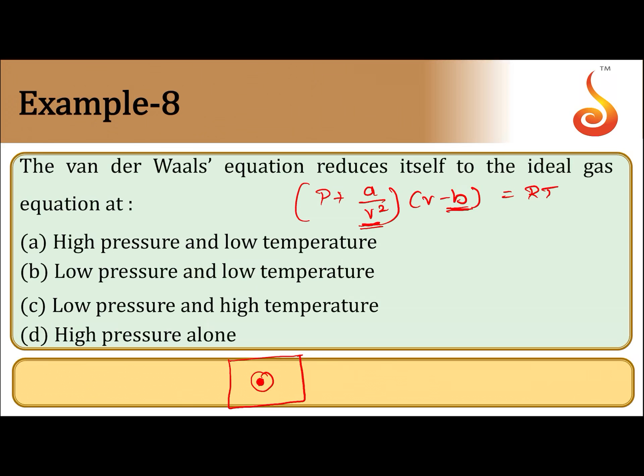The intermolecular forces of attraction are also negligible, so there will be no volume correction and no pressure correction. If there is no pressure correction, A by V square can be ignored. If there is no volume correction, B can be ignored. So PV becomes equal to RT.